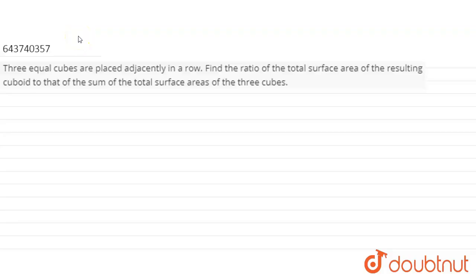Hey guys, we have given a question. Three equal cubes are placed adjacently in a row. Find the ratio of total surface area of the resulting cuboid to that of the sum of total surface area of three cubes.